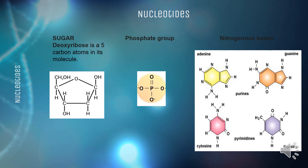Let's focus on the nitrogenous bases in DNA. Each DNA nucleotide contains only one of four possible nitrogenous bases: adenine, guanine, thymine, and cytosine. The four bases are usually abbreviated A, G, T, and C.